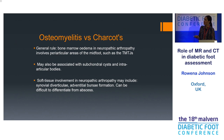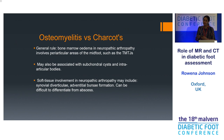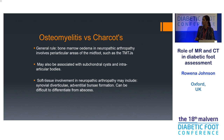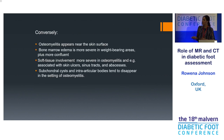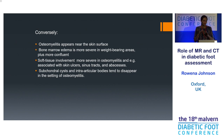With Charcot, you look for features such as subchondral cysts and intra-articular bodies. There was a comment earlier about whether osteomyelitis can cause features that look like Charcot — on imaging I think it can, because once you have osteomyelitis or septic arthritis, you get secondary degenerative changes, and at that stage it's quite hard to separate them out. If you're trying to work out whether it's a Charcot foot with superimposed infection, you're looking for loss of the subchondral cysts and intra-articular bodies — those degenerative features tend to disappear with a superimposed infection.